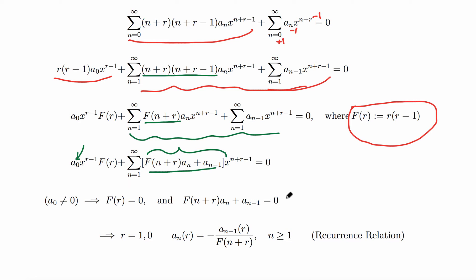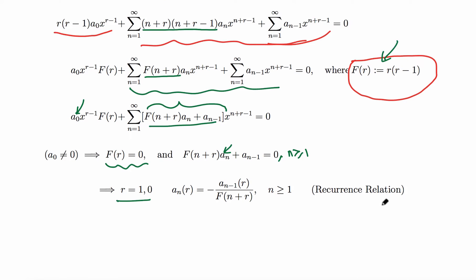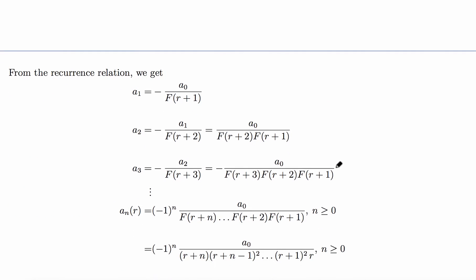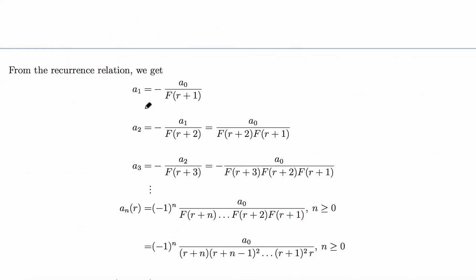Solving F(r) = r(r−1) = 0 gives two roots: r = 1 and r = 0. The recurrence relation is aₙ = −aₙ₋₁ / F(n+r), valid for n ≥ 1. Plugging in n = 1, 2, 3 we find a pattern: aₙ(r) = (−1)ⁿ · a₀ / [F(r+n)·F(r+n−1)···F(r+1)].